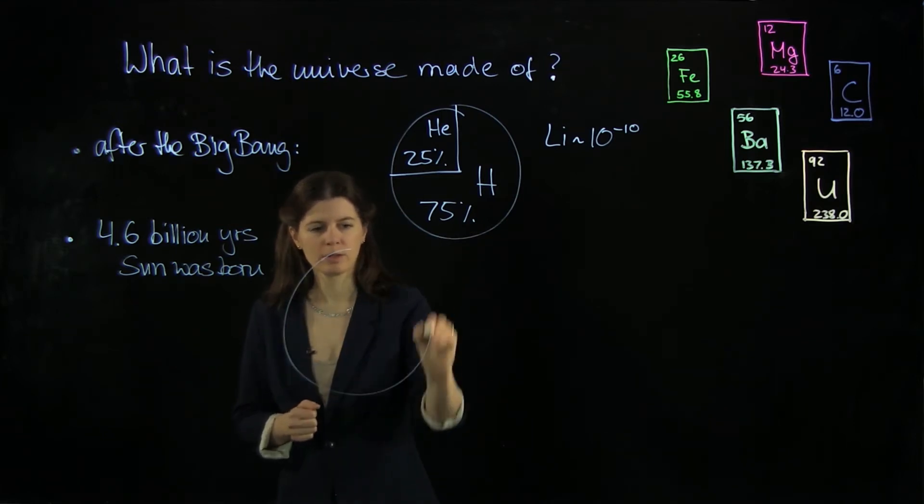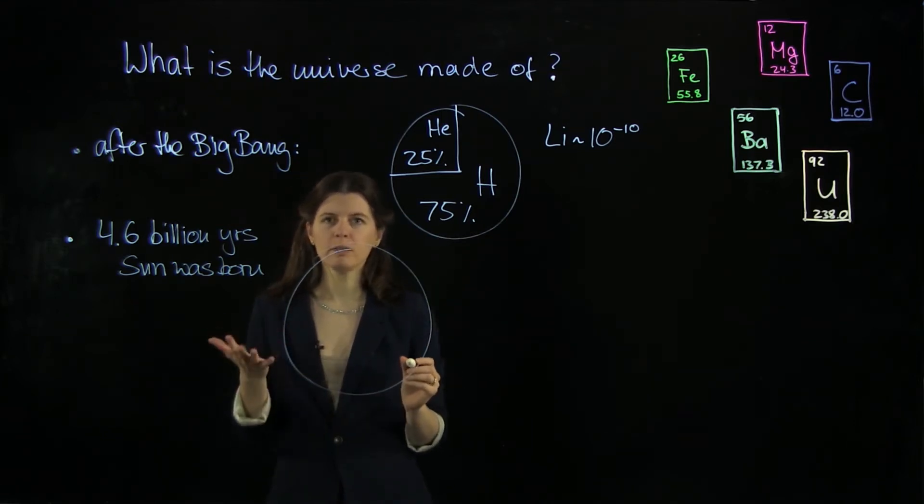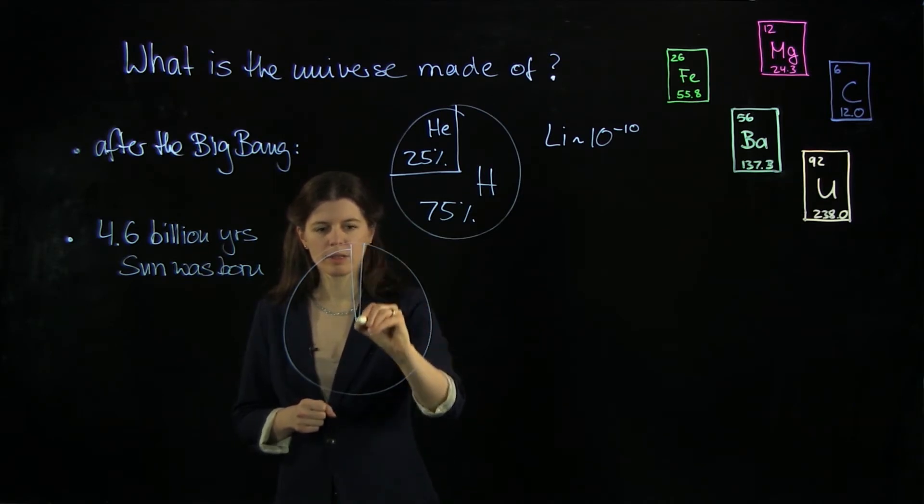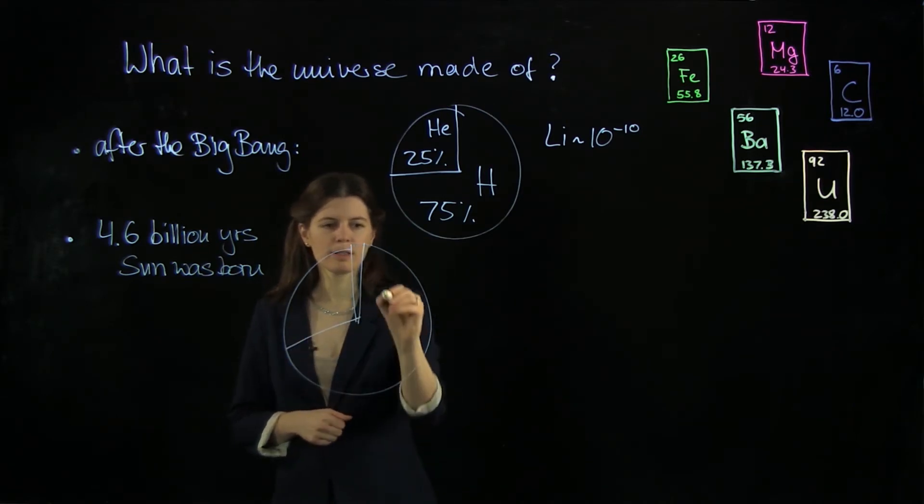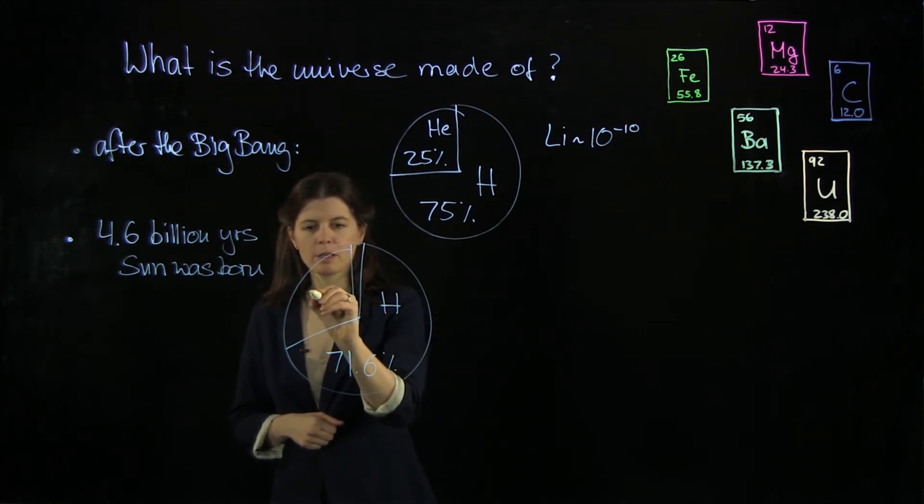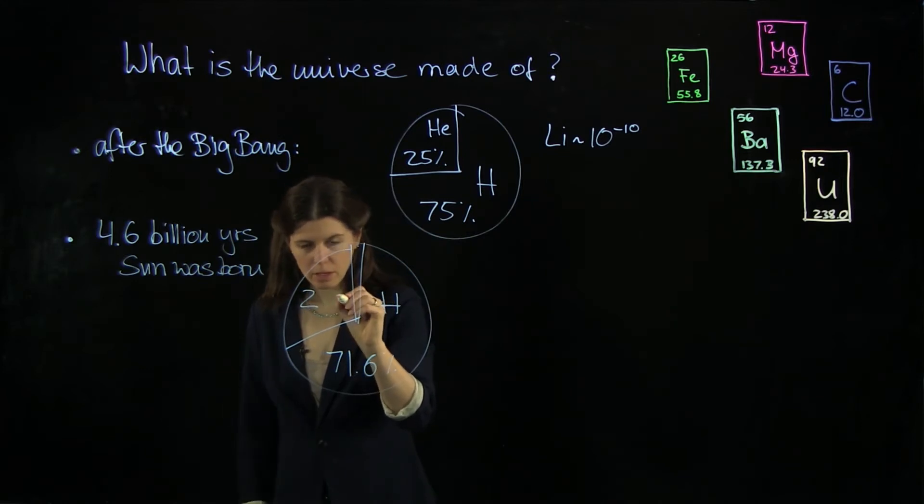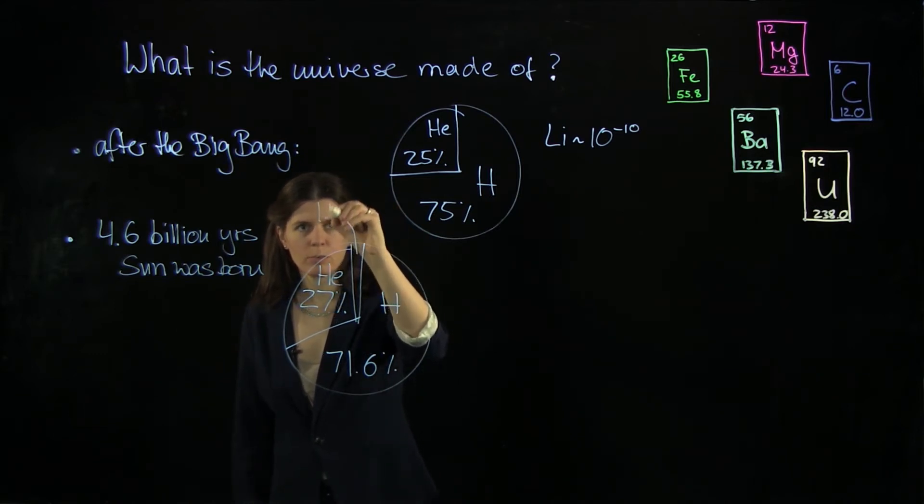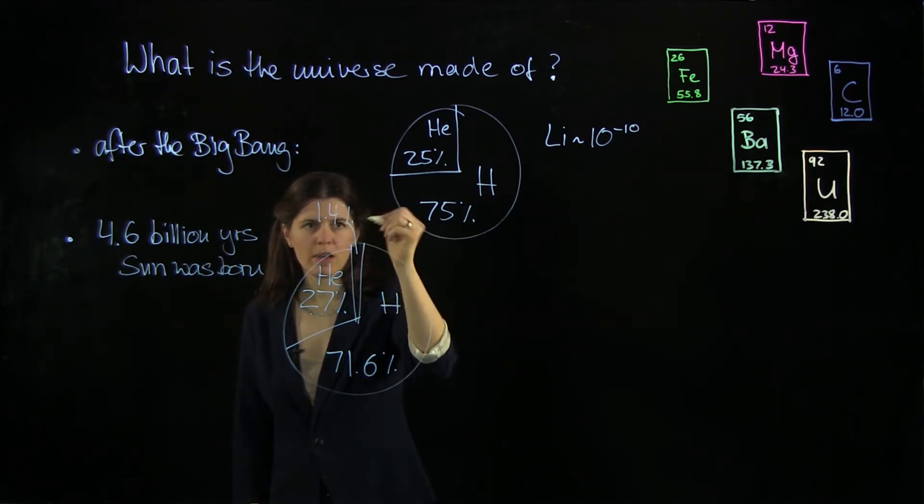And as it turns out, the universe looked a little bit different in its composition. It looked something like this. Here we have hydrogen, 71.6 percent, 27 percent helium. And then this one here, that's 1.4 percent of heavy elements.